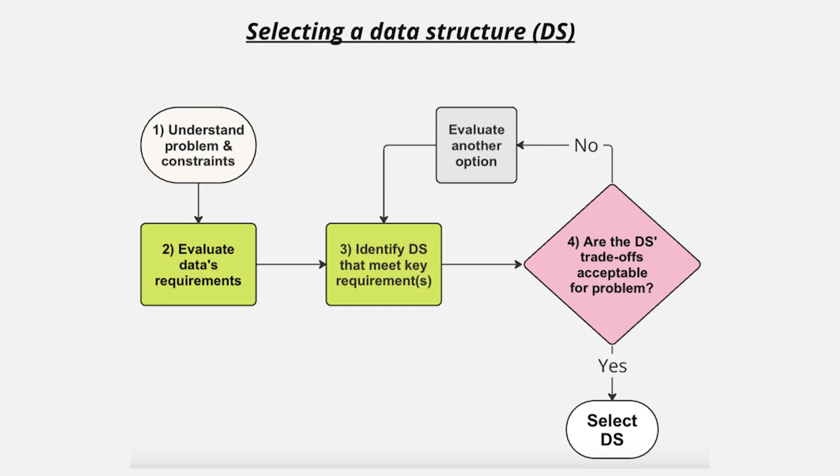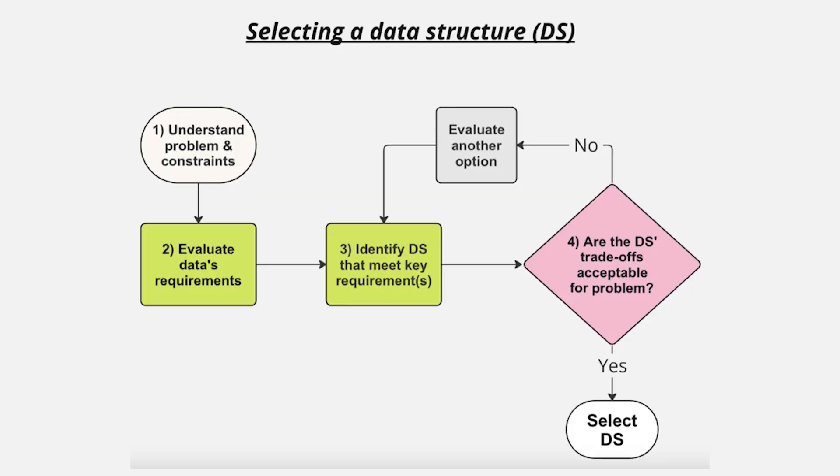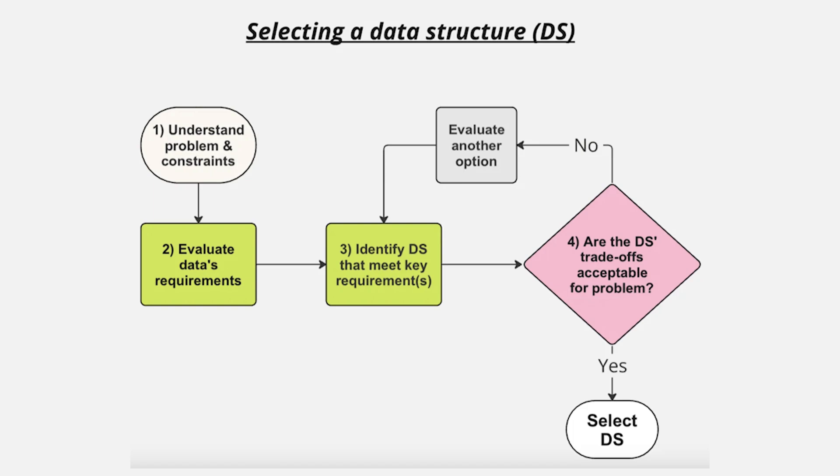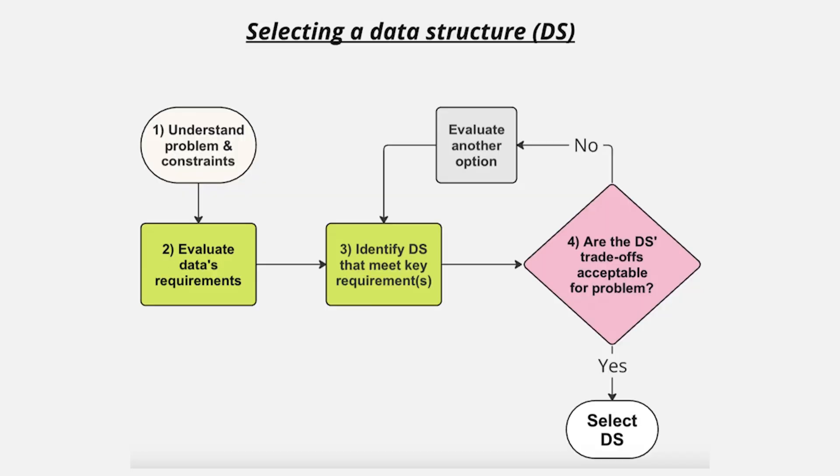Each of the data structures is going to have its own strengths and weaknesses, so choosing the best one is really about understanding which trade-offs you're willing to accept. I found a graph while researching for this video that outlines a few steps: first, understand the problem and its constraints; second, evaluate the data's requirements; third, identify which data structures meet the key requirements; and fourth, ask whether the trade-offs of those data structures are acceptable. If the answer is no, go back and evaluate a different data structure. If yes, select that one. Make sure to get to know all the different data structures out there, experiment, and understand their trade-offs.